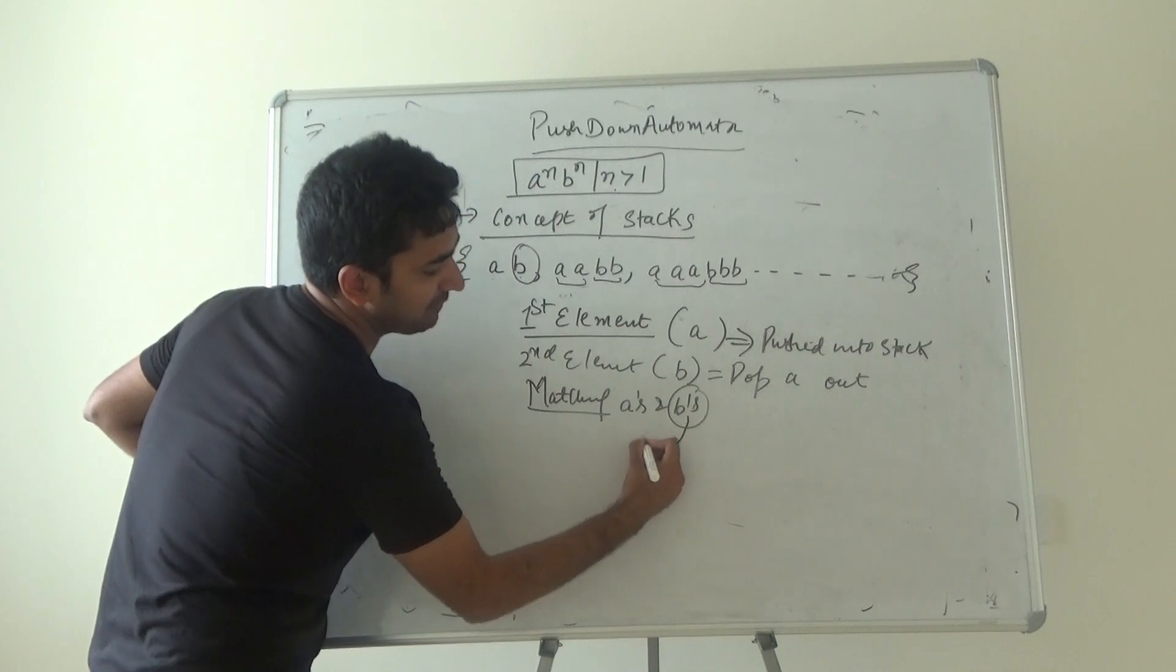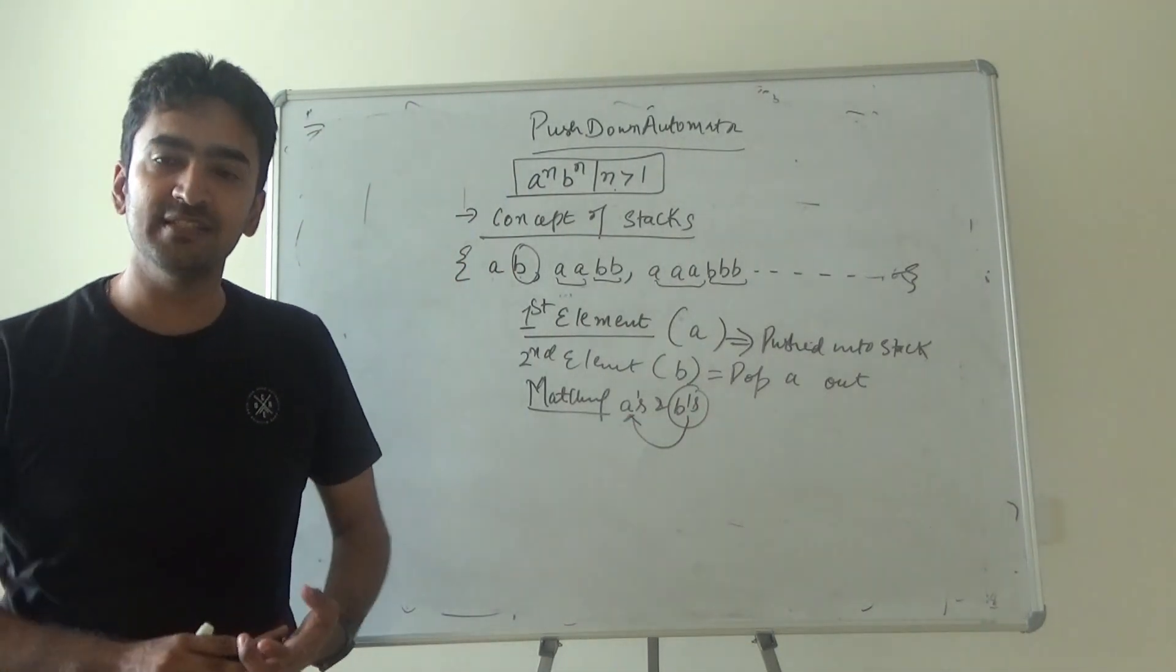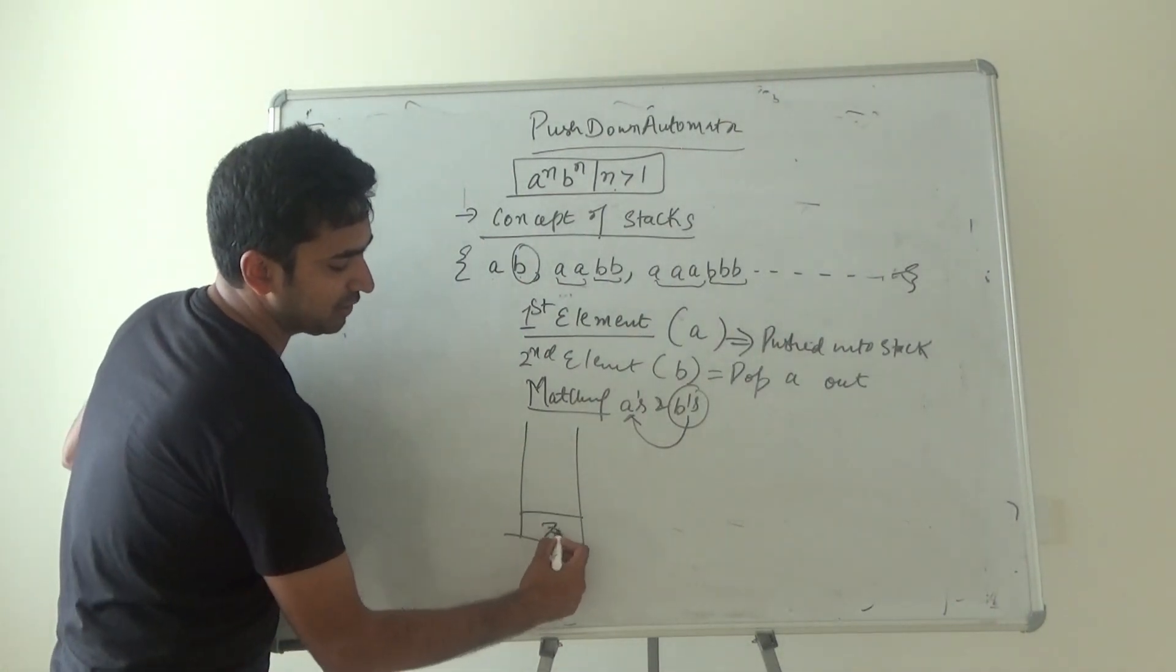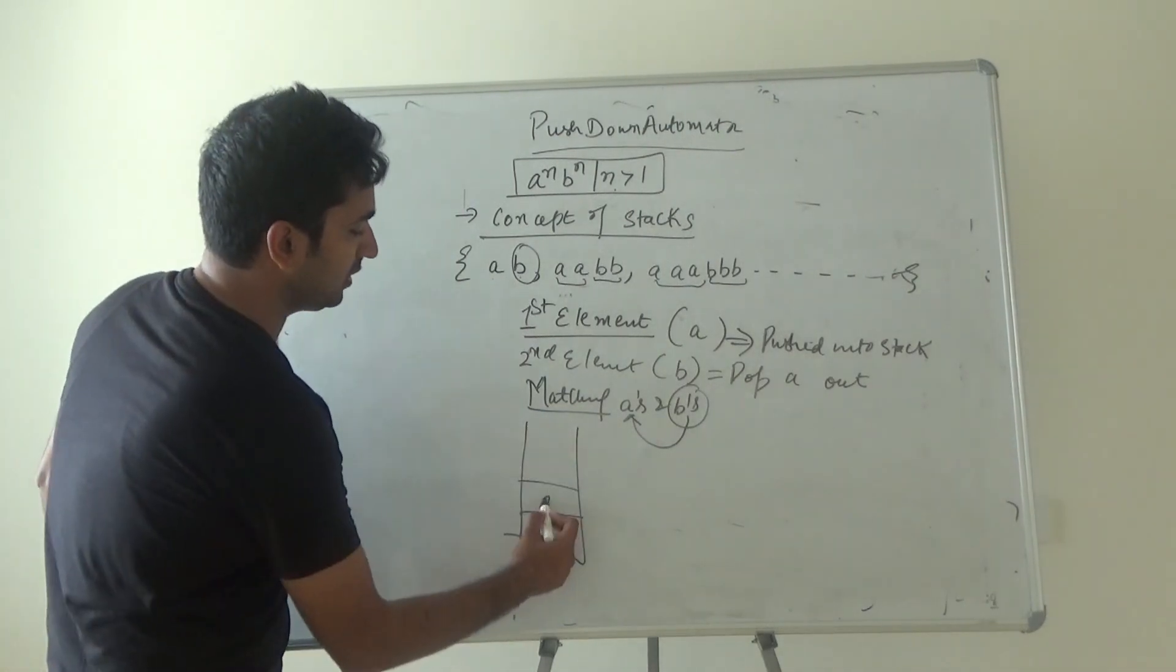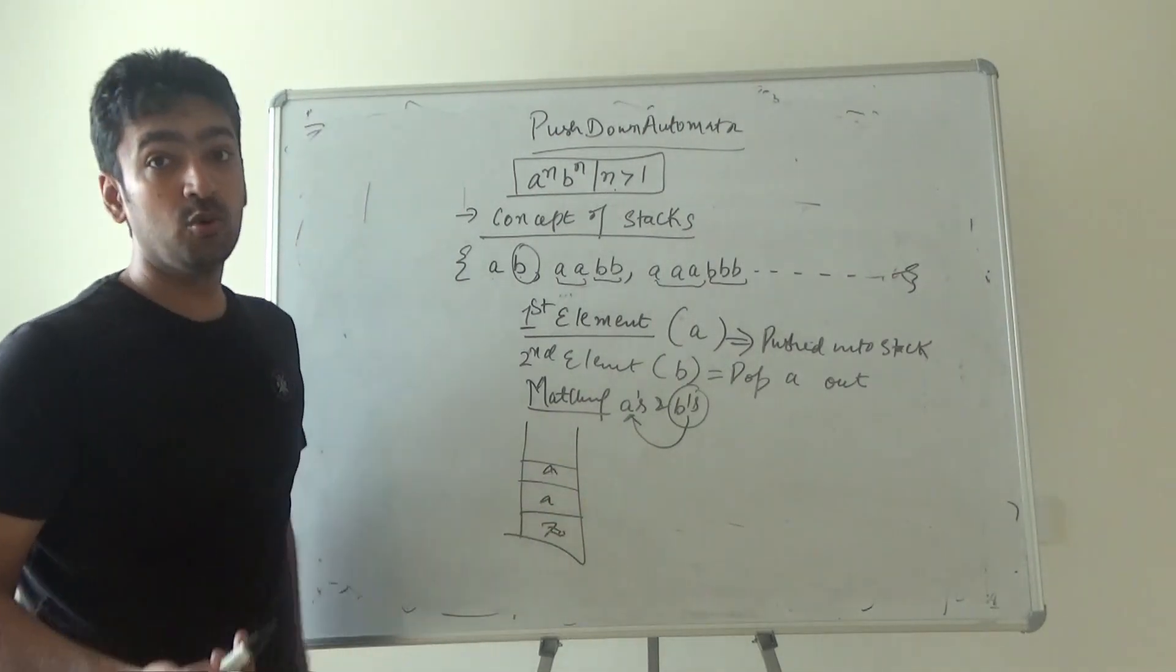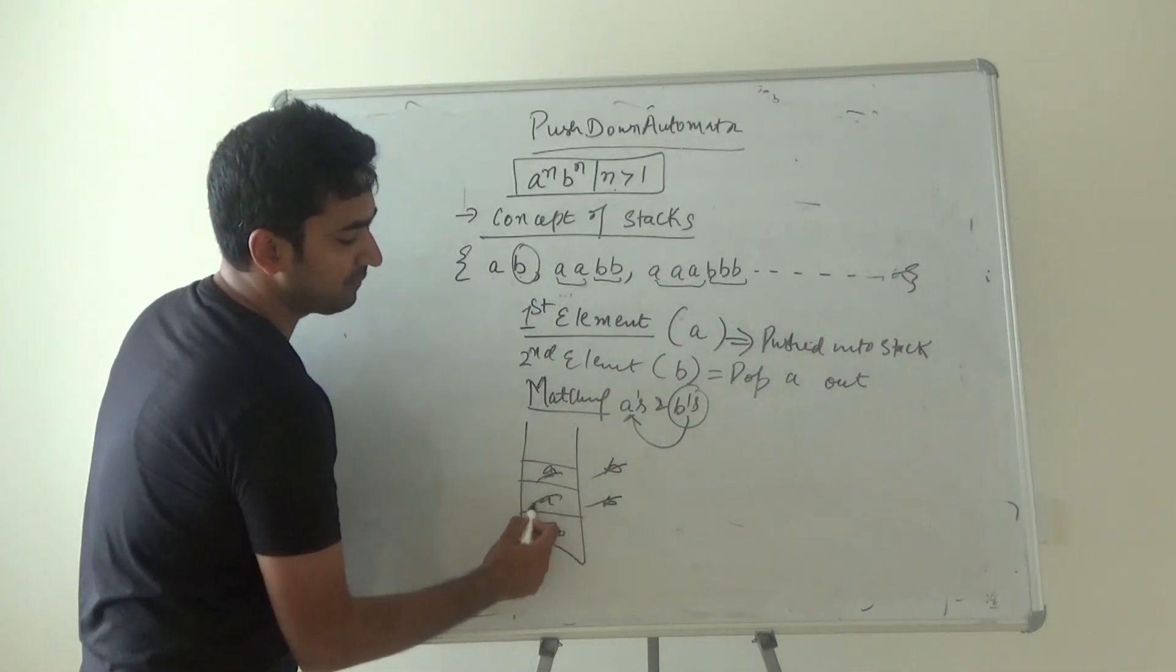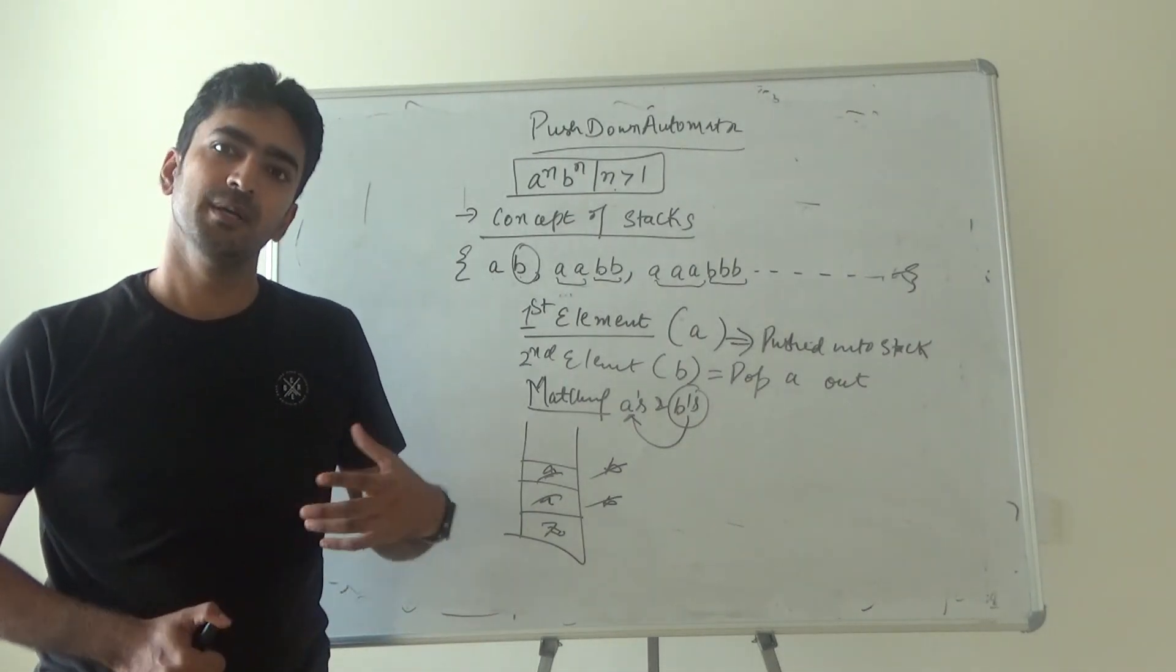B's are getting matched with a's. If there are 2 a's, then there are 2 b's. Then it means your stack will be there. There will be one element which is initial pushdown symbol. A's will go into the stack and b will pop them out by matching individual number of a's with individual number of b's.